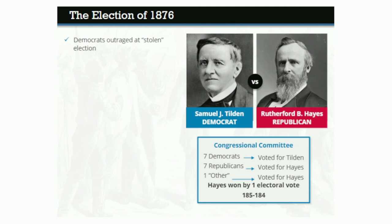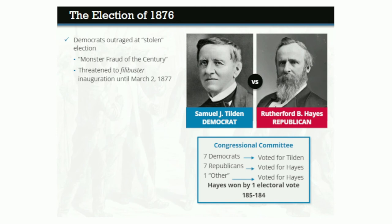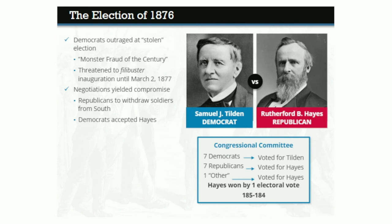Democrats were outraged at what they considered a stolen election, especially since Tilden had won the popular vote. They called the decision the monster fraud of the century and threatened to filibuster the Committee's decision all the way until March 2nd, 1877, two days before inauguration. At that point, behind-the-scenes negotiations yielded a compromise: Republicans agreed to withdraw all remaining soldiers from the South in exchange for Democrats' acceptance of Hayes as President. Republicans also promised economic aid to the South and a cabinet appointment for a Democrat. The so-called Compromise of 1877 allowed Rutherford B. Hayes to be peacefully sworn in as President on March 4th.